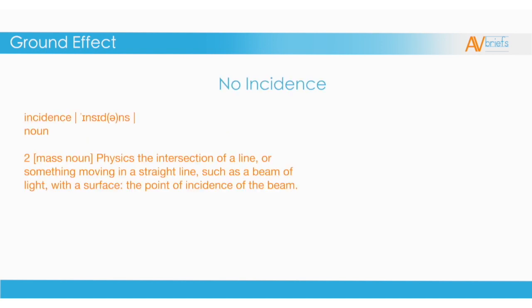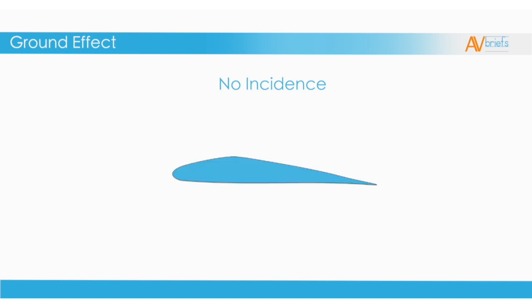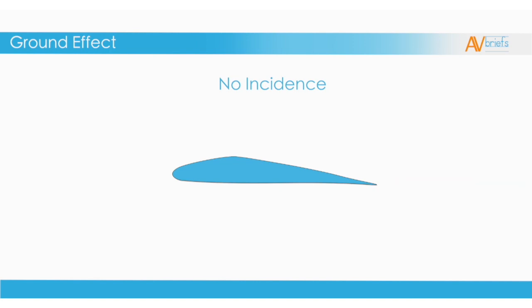In physics, incidence is the intersection of a line or something moving in a straight line — such as a beam of light — with a surface. The point of incidence of the beam is the beam of light in relation to the ground or other surface. If something has no incidence, it has no angle between the direction of travel and the surface. A wing has no incidence when it is level with the surface it is flying over; such a wing would produce so little lift as to be not useful. Therefore, engineers give the wing an angle of incidence, which is an angle of attack even in level flight.